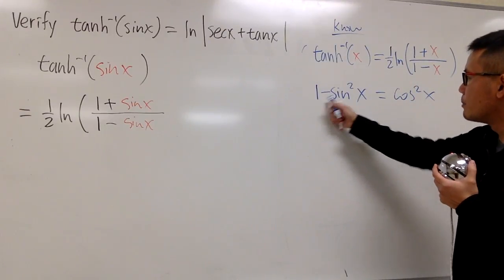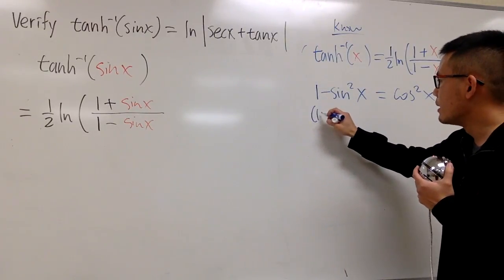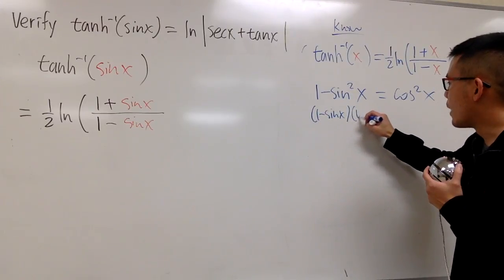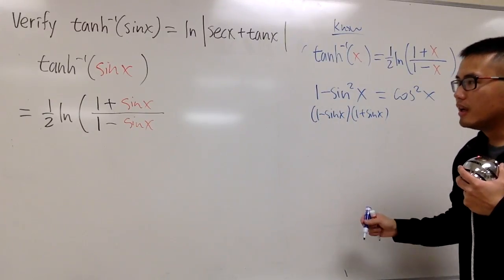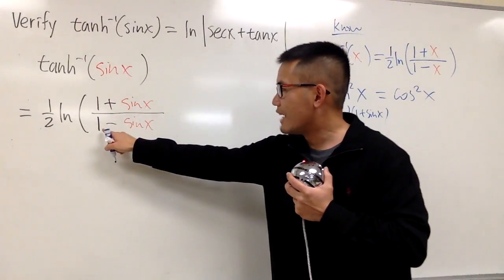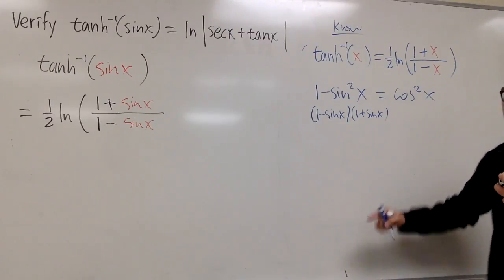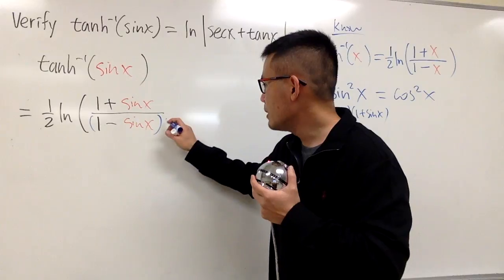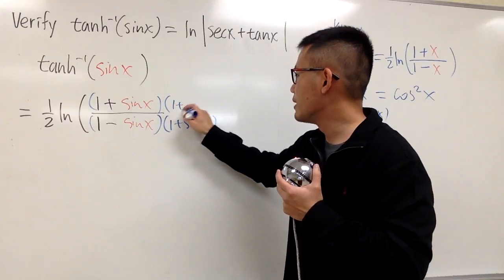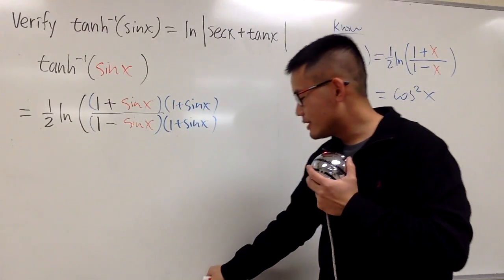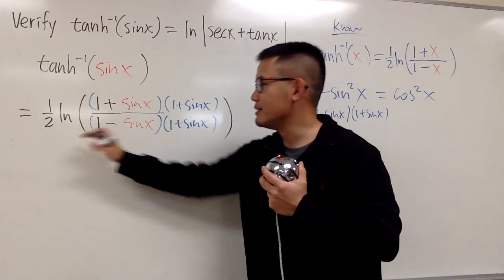The denominator has 1 minus sin x to the first power, but I can factor 1 minus sin squared x as (1 minus sin x)(1 plus sin x) — the difference of two squares. We already have (1 minus sin x), so all I need to do is multiply both numerator and denominator by (1 plus sin x). That's why I didn't close the parentheses earlier — and now I'll close them.